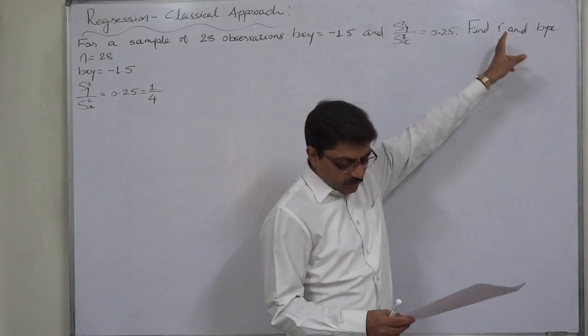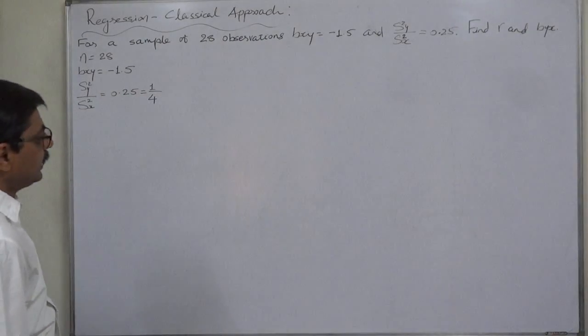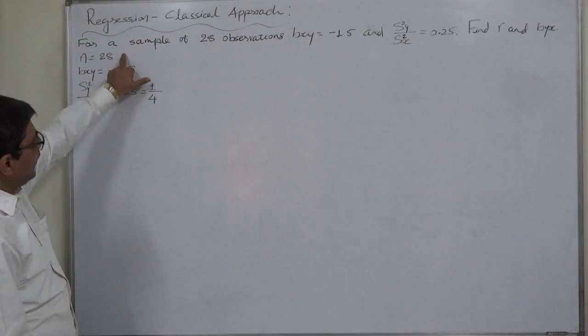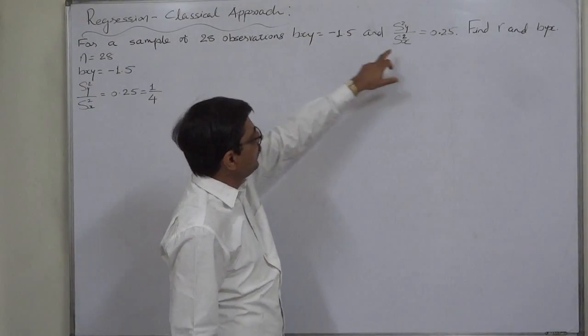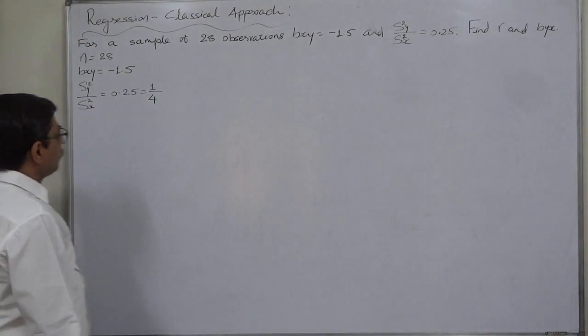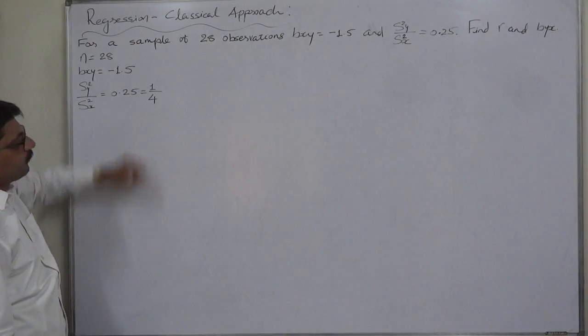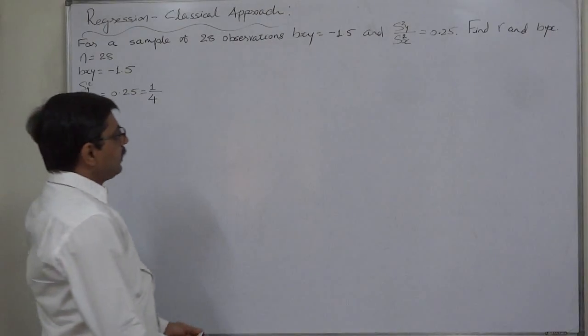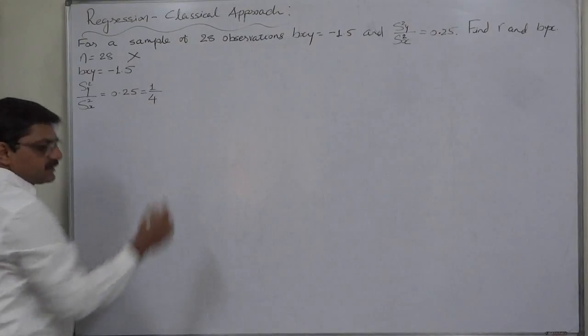Find out the coefficient of correlation and Byx. The summary is N equals to 28, Bxy equals to minus 1.5, and the ratio of variance of y to variance of x is 0.25 or 1 by 4. Now actually there is no role of N in this case.